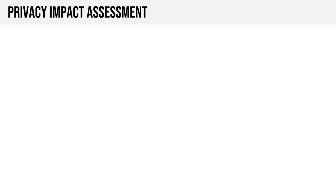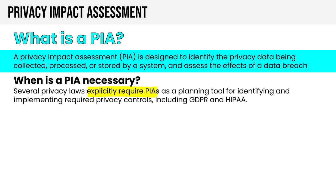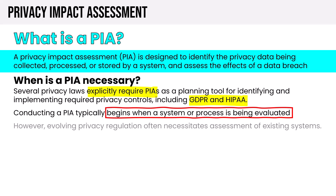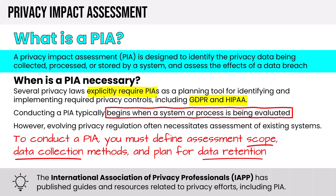A Privacy Impact Assessment (PIA) is designed to identify privacy data being collected, processed, or stored by a system and to assess the effects of a data breach. Several privacy laws — including GDPR and HIPAA — explicitly require PIAs as a planning tool for identifying and implementing required privacy controls. Conducting a PIA typically begins when a system or process is being evaluated before implementation, though evolving privacy regulations often necessitate assessment of existing systems. To conduct an effective PIA, you must define the assessment scope, data collection methods, and plan for data retention. The International Association of Privacy Professionals has published guides on conducting PIAs.